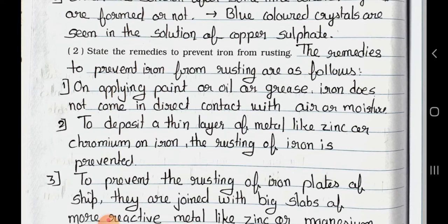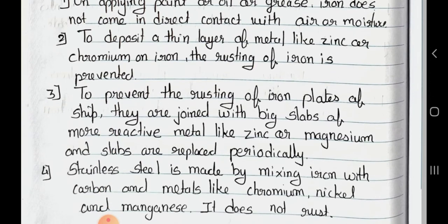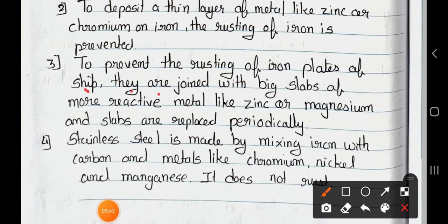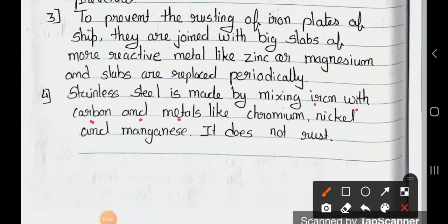Question 2: state the remedies to prevent iron from rusting. Answer: 1) Applying paint, oil, or grease prevents iron from coming in direct contact with air or moisture. 2) Depositing a thin layer of metal like zinc or chromium on iron prevents rusting. 3) To prevent rusting of iron plates, they are joined with slabs of more reactive metal like zinc or magnesium, which are replaced periodically. 4) Stainless steel is made by mixing iron with carbon and metals like chromium, nickel, and manganese — it does not rust.